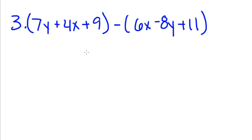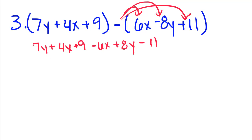We have one more. So we have this part is going to stay the same. We're going to distribute that negative: negative 6x plus 8y minus 11. Now this time we have more than one variable, but that really doesn't change anything because we're still going to combine like terms like we normally would. So 7y plus 8y is 15y, plus 4x minus 6x is negative 2x, and 9 minus 11 is negative 2.